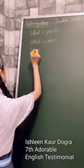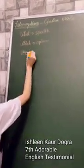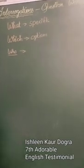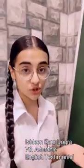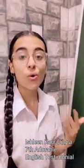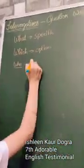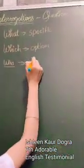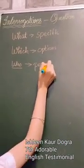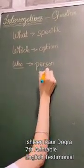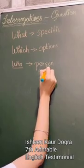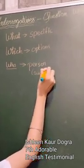Then comes 'who'. Who is used many times — like 'Who is your father?', 'Who is your teacher?', 'Who is the person you love the most?' Who is generally used to ask for a person in a sentence, and is used as a subject. So, who is used to refer to a subject.